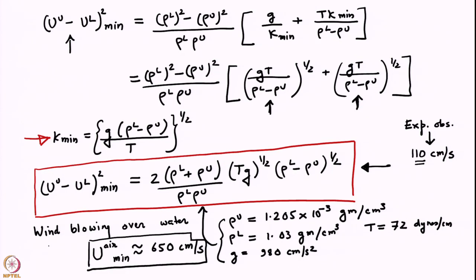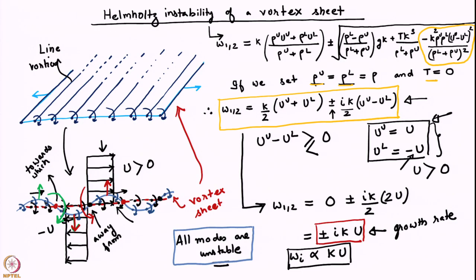This band of wave numbers comes from the Helmholtz vortex sheet model, whereas the ones that are stabilized are stabilized either because of surface tension or because of gravity. That is what we wanted to discuss about the Helmholtz instability of a vortex sheet. There are many engineering applications; I will mention only two of them.